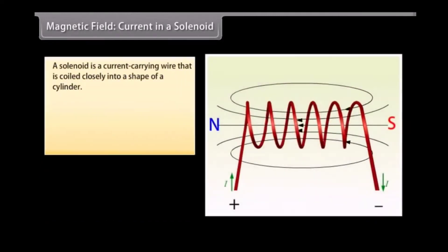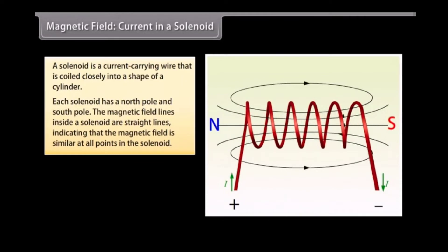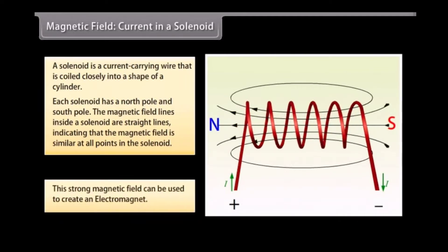Magnetic field current in a solenoid. A solenoid is a current carrying wire that is coiled closely into a shape of a cylinder with the turns as close together as possible. This is similar to a bar magnet. Each solenoid has a north pole and south pole. The magnetic field lines inside a solenoid are straight lines and indicate that the magnetic field is similar at all points in the solenoid. This strong magnetic field in the solenoid can be used to magnetize magnetic materials. This type of a magnet is called an electromagnet.